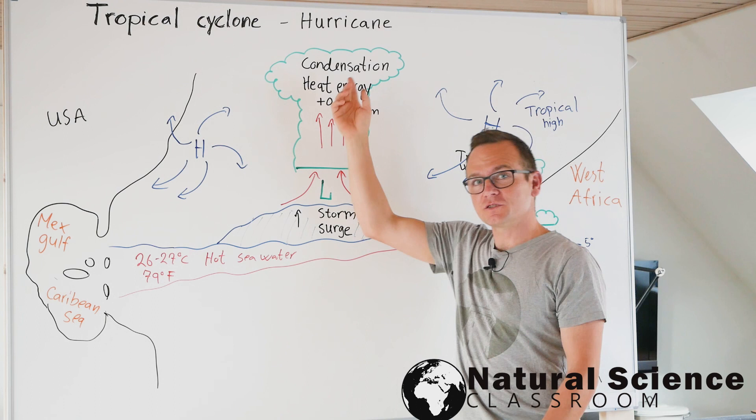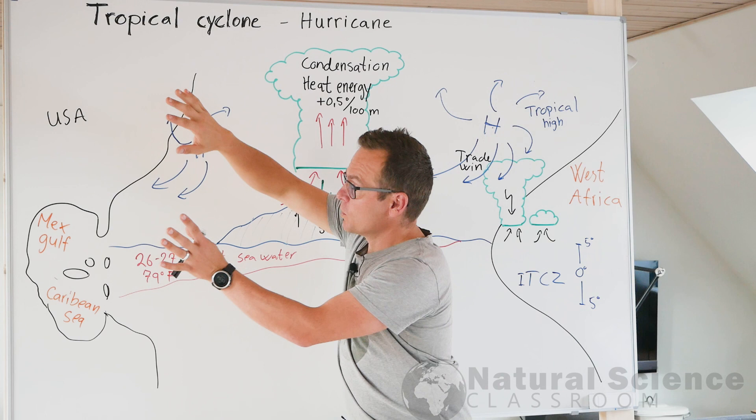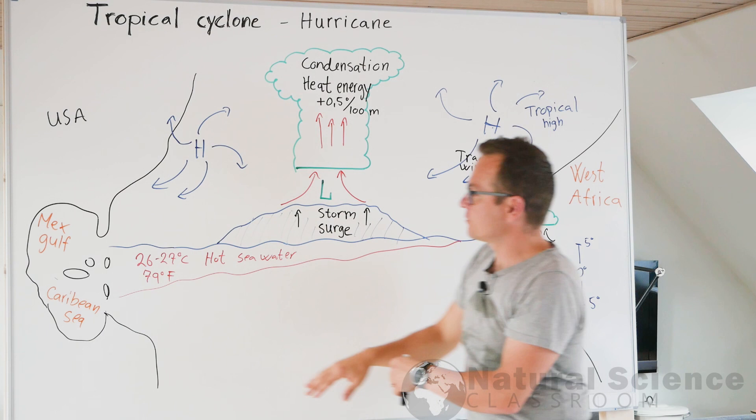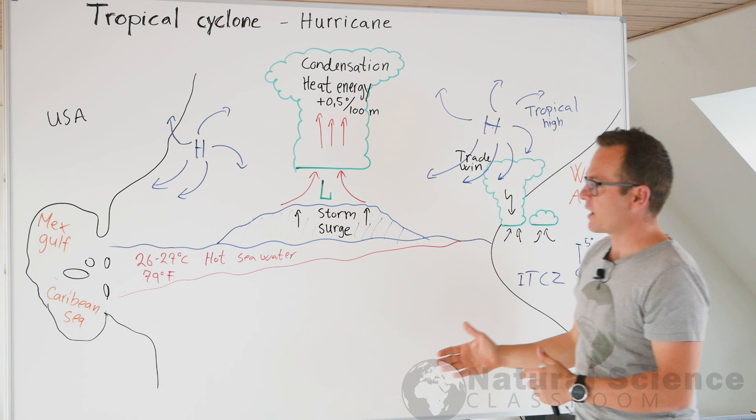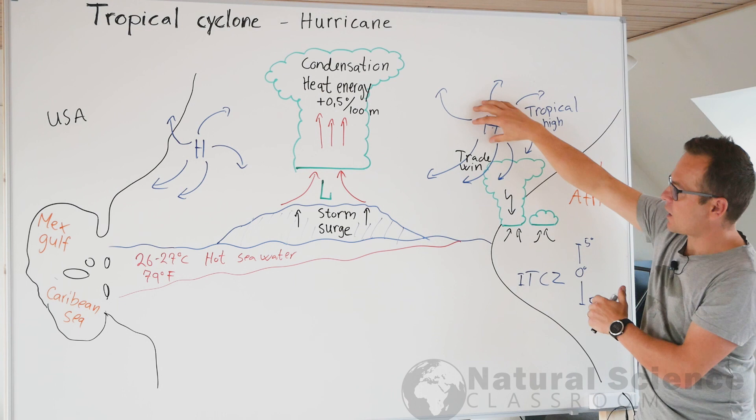I built up the white board like this, so we are seeing it from above over here - USA, tropical high here, Mexican Gulf. In the middle I sliced the hurricane in half, so we're seeing it from the side perspective, and also the Atlantic Ocean is like sliced into half. Over here we have West Africa seen from above, tropical high up here, and the intertropical convergence zone down here.